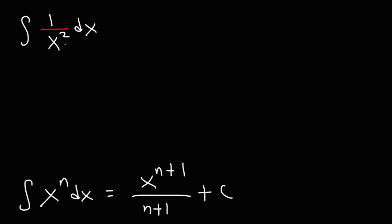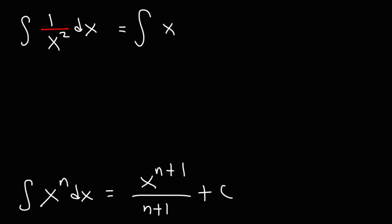So what we need to do is move the variable x from the denominator to the numerator of the fraction. As we do that, the exponent will change sign — it's going to change from positive 2 to negative 2. So we have the indefinite integral of x raised to the negative 2. Now we can use the power rule.